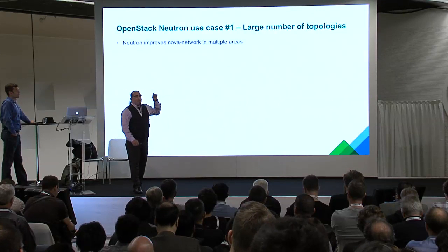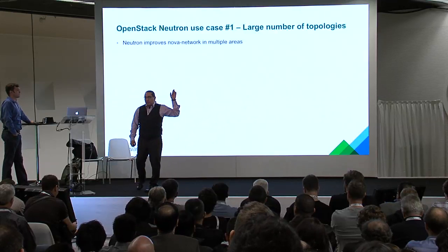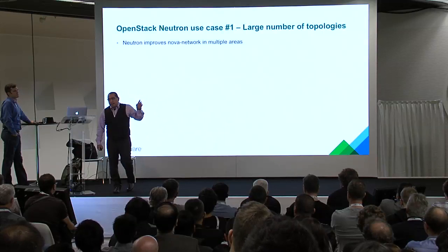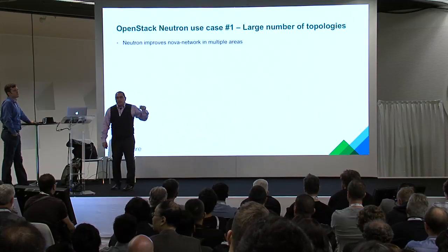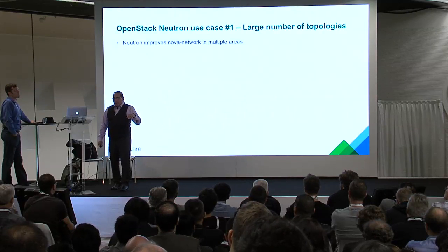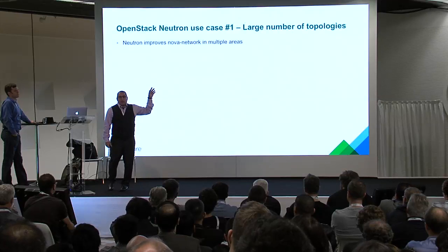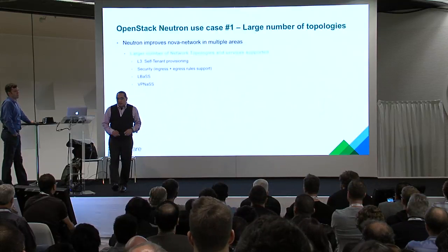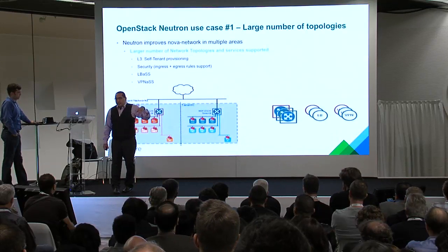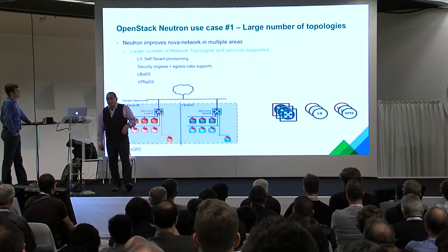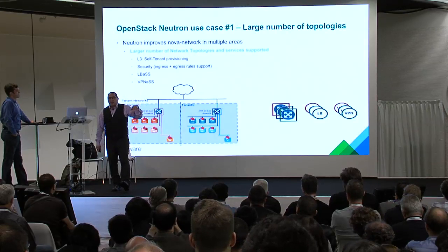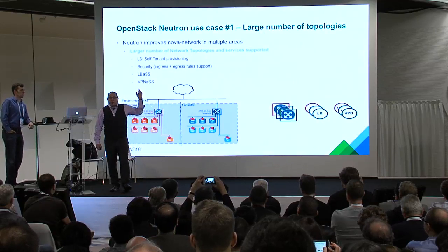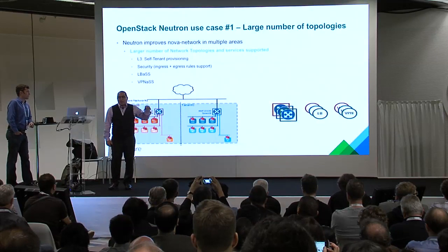If you're looking at large-scale environments — hundreds or thousands of tenants, thousands of networking switches — there's a scalability issue with Nova networking. Neutron improves on this type of environment. It supports a large number of tenants, L3 type routers, security groups, load balancing as a service, VPN as a service. Neutron provides that basic functionality and plumbing, allowing multiple tenants to use multiple logical routers, multiple logical switches, load balancer, and VPN services.